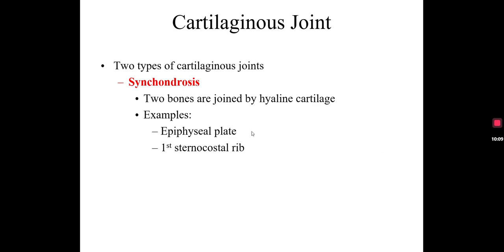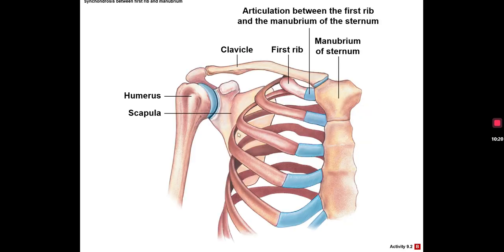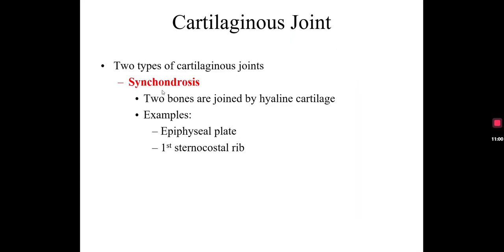The second example of a synchondrosis is the sternocostal rib joint. Here's a view of our ribs — they come from the thoracic vertebrae and extend forward. Notice the rib does not make direct contact with the sternum; there is hyaline cartilage connecting the rib to the sternum. This is the sternal angle between the manubrium and the body. Here's the first rib and the second rib. This hyaline cartilage connection is an example of synchondrosis. That ends this lesson on fibrous joints and cartilaginous joints. In subsequent lessons, we'll take a look at range of motion and then synovial joints.